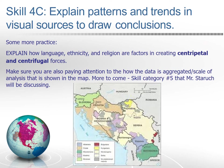Here's a practice prompt to work through yourself and with your students: explain how language, ethnicity, and religion are factors in creating centripetal and centrifugal forces. Make sure you're also paying attention to how the data is aggregated — the scale of analysis shown in the map. This is a map of the former Yugoslavia and how it's been broken down into multiple countries after the fall of Yugoslavia in the 1980s and 1990s.